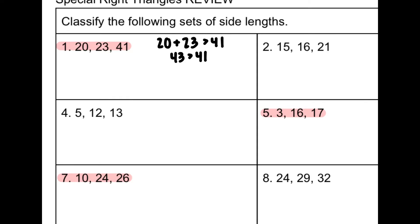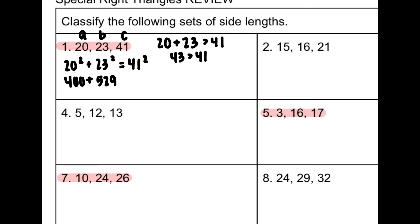Now I'm going to use the Pythagorean Theorem. I'm going to label A and B. Remember, C is always going to be your longest side — it doesn't matter what's A or B, but C has to be the longest one always. So I have 20 squared plus 23 squared equals 41 squared. That gives 400 plus 529, and 41 squared is 1,681. Combining the left: 400 plus 529 is 929. Since 929 is less than 1,681, we have an obtuse triangle.